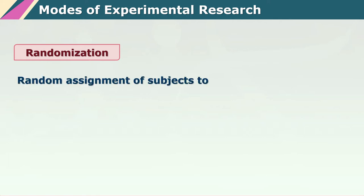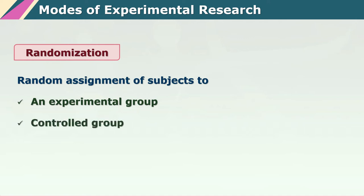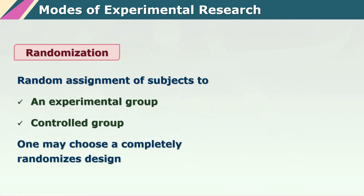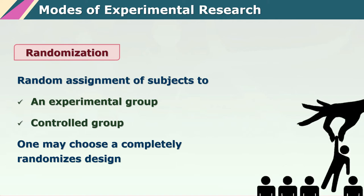One of the modes that is typically used, and what is the gold standard of a true experimental design, is the mode called randomization. This is actually quite a difficult mode to achieve, and so one should not loosely use the word that a randomized experiment was done. What we need to do is take a pool of subjects and randomly assign these subjects to the experimental group and to the control group to ensure that we are not biased towards any particular group.